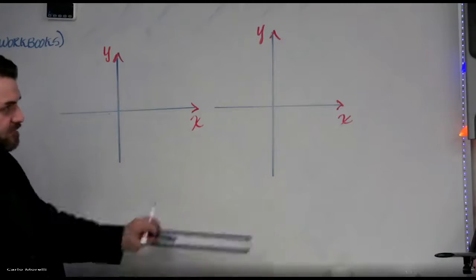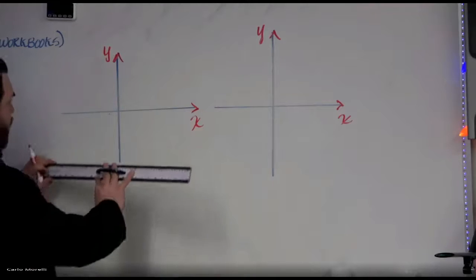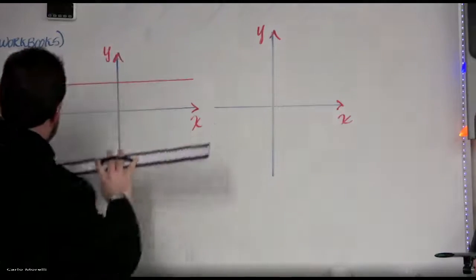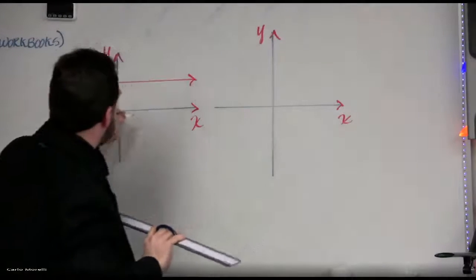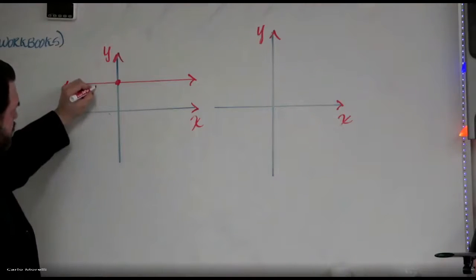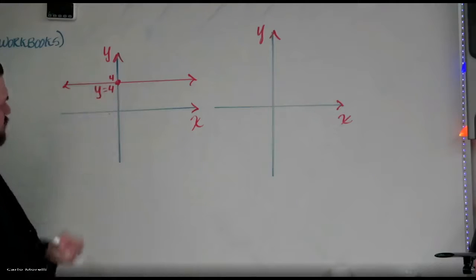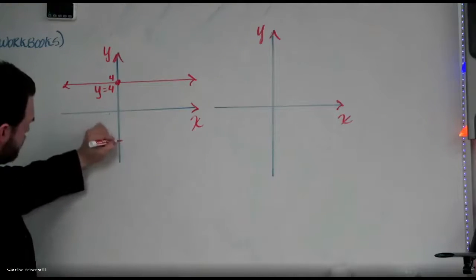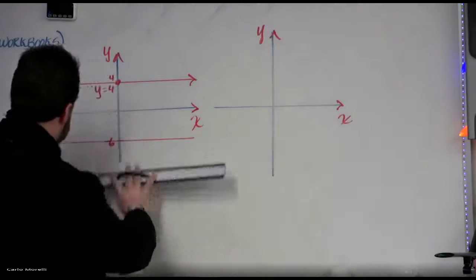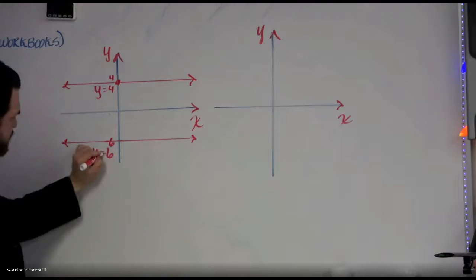Here come the lines. I've got to draw two lines on each one of these planes. Here's line number one — that's a straight line, a flat line. Its equation is Y equals 4. Now down here we'll call this negative six, and I'll draw another line. Its equation will be Y equals negative six. Now over here I'm going to draw another line.